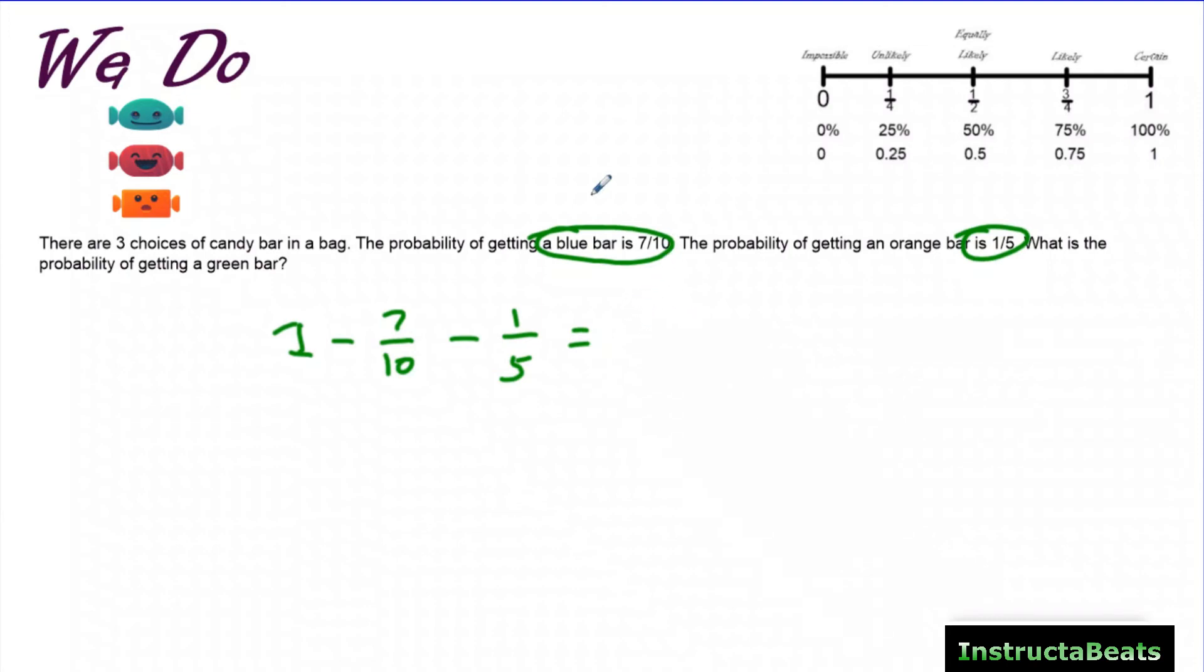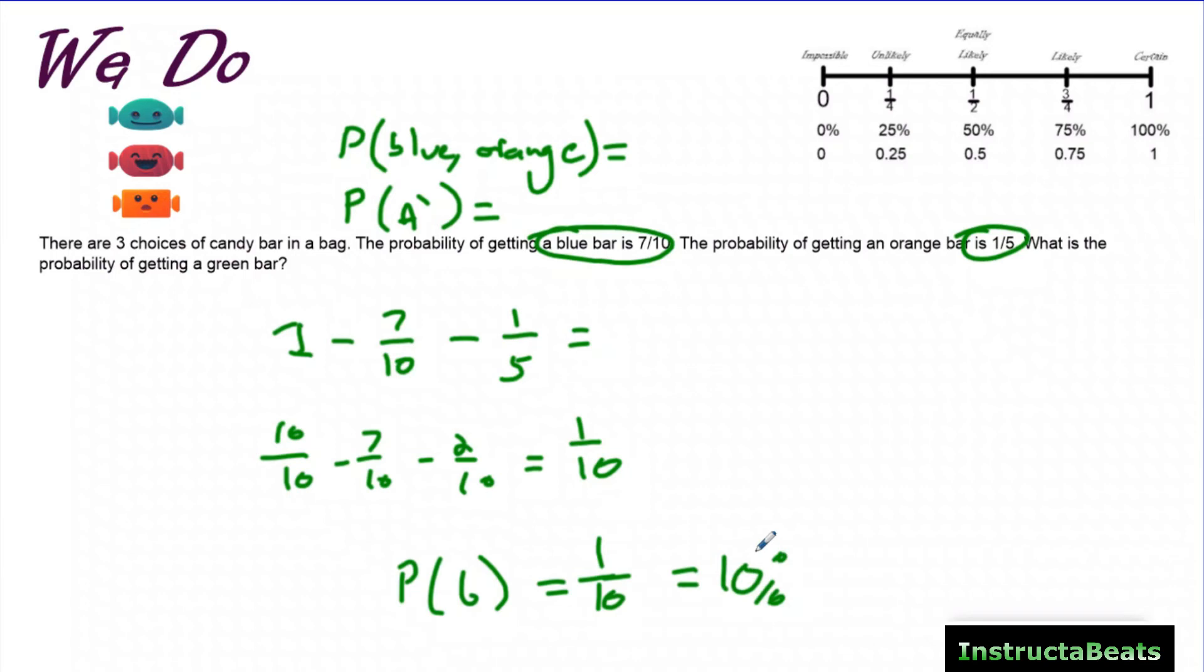In other words, this question is asking you, what is the complement for the event of getting a blue or orange bar? So we need to find the probability of getting a blue or orange bar, and then subtract it to find the complement. If we name that event A, we can label it like that. So first I want to find common denominators. So I'm going to do 10/10 minus 7/10 minus 2/10, and that's going to leave me with 1/10. The probability of getting a green bar is 1 out of every 10, or 10%.